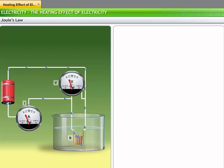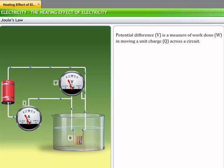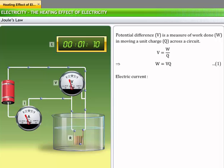To derive Joule's law, let a potential difference of V volts drive a charge Q coulomb through a heating element and W be the work done. The potential difference is a measure of work done in moving a unit charge across a circuit. From this, we get equation 1: V is equal to W divided by Q, or W is equal to VQ. The amount of electric current passing through a circuit is the product of the rate of electric current and the time of flow.